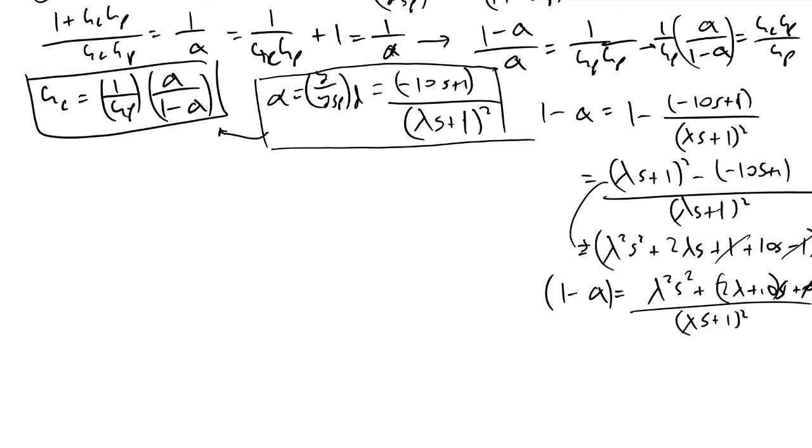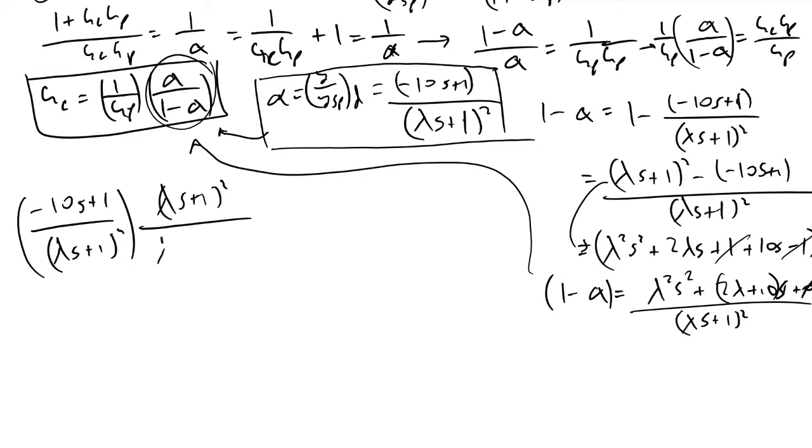Now if we plug this into our gc term here, we'll evaluate this alpha over 1 minus alpha term first. We know that alpha was minus 10s plus 1 divided by (lambda*s plus 1) squared, and we just evaluated what 1 minus alpha is. We're going to take the inverse of that, so we're going to have (lambda*s plus 1) squared in our numerator divided by lambda squared s squared plus (2*lambda plus 10)*s.